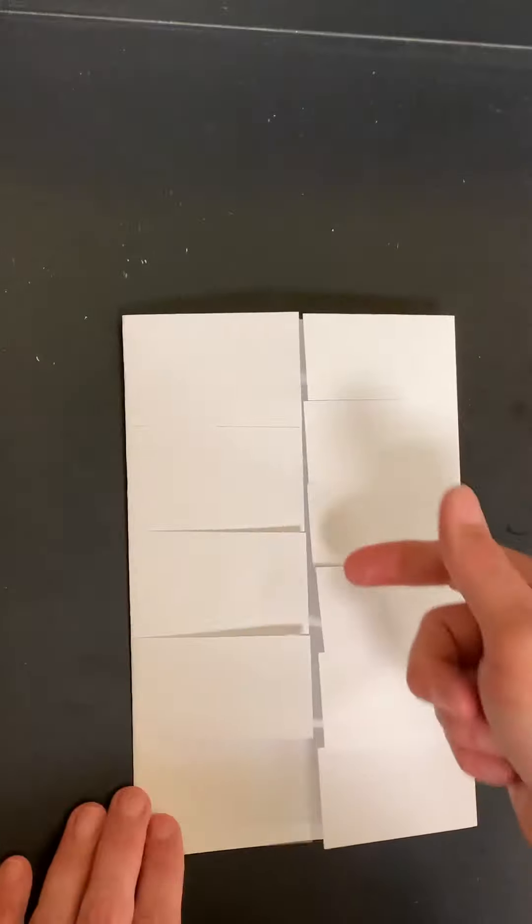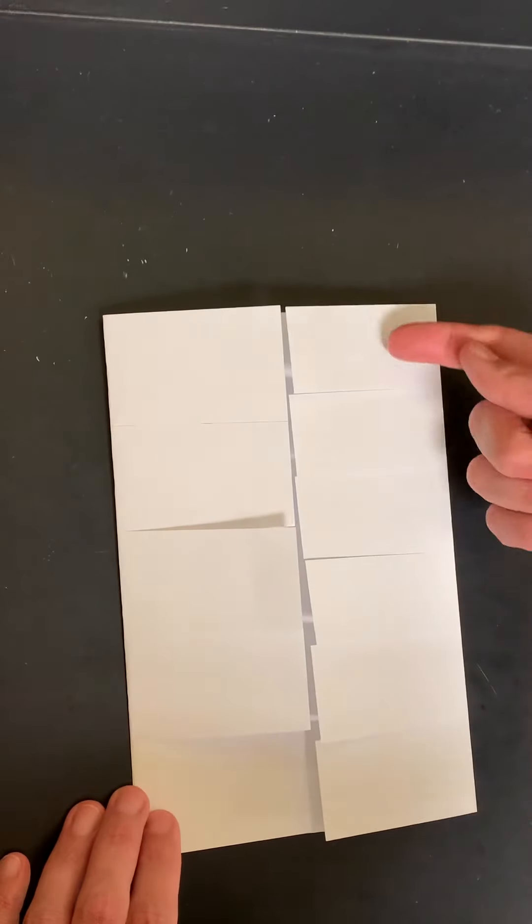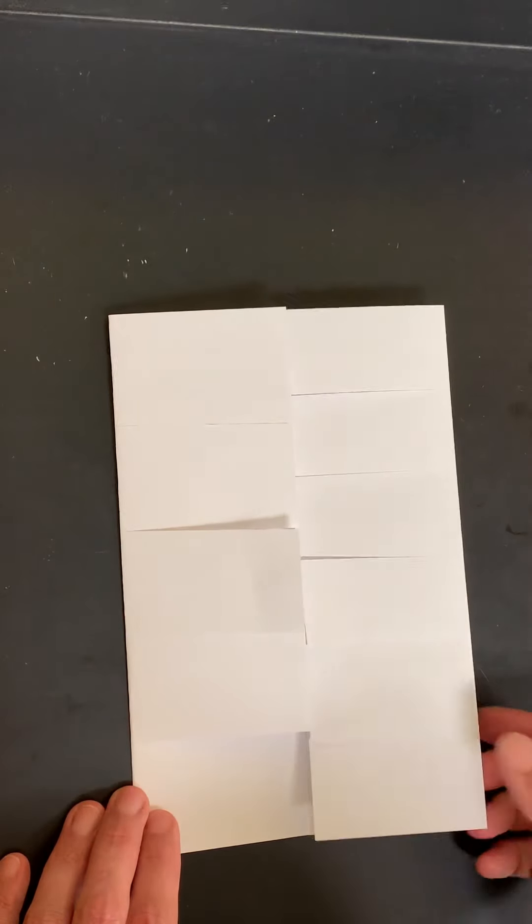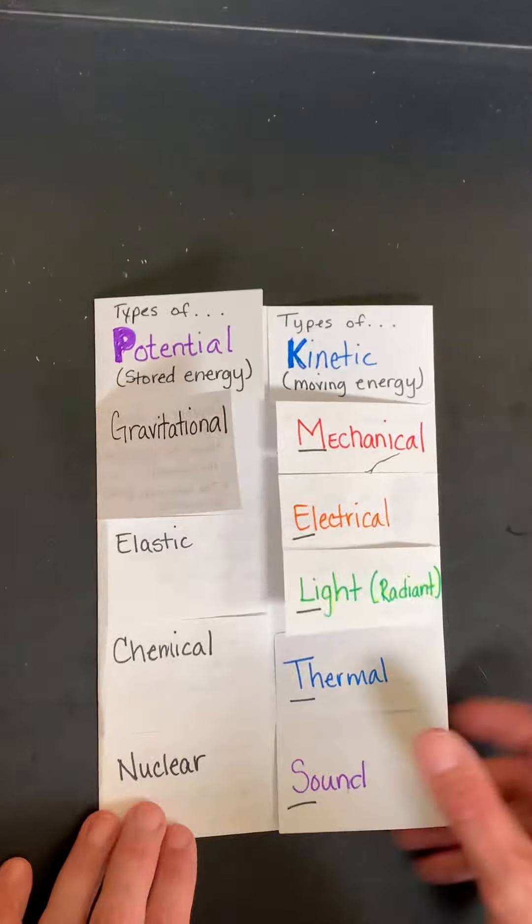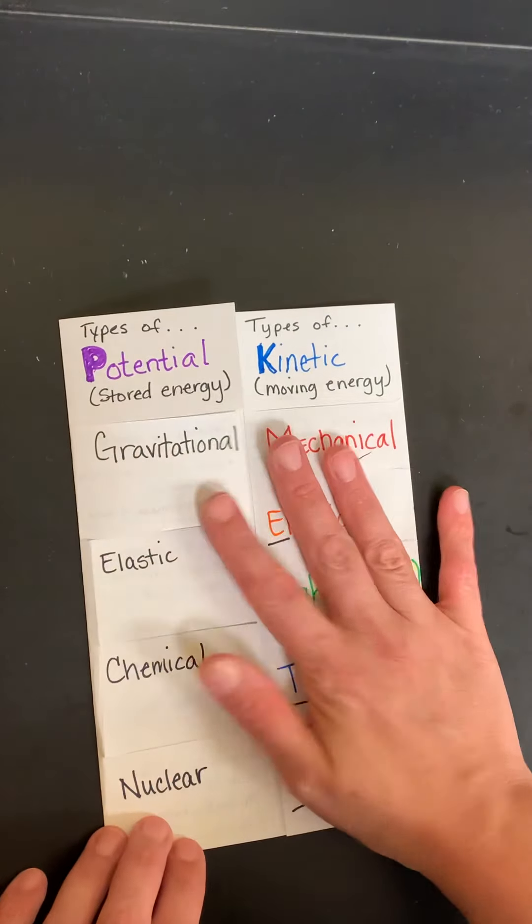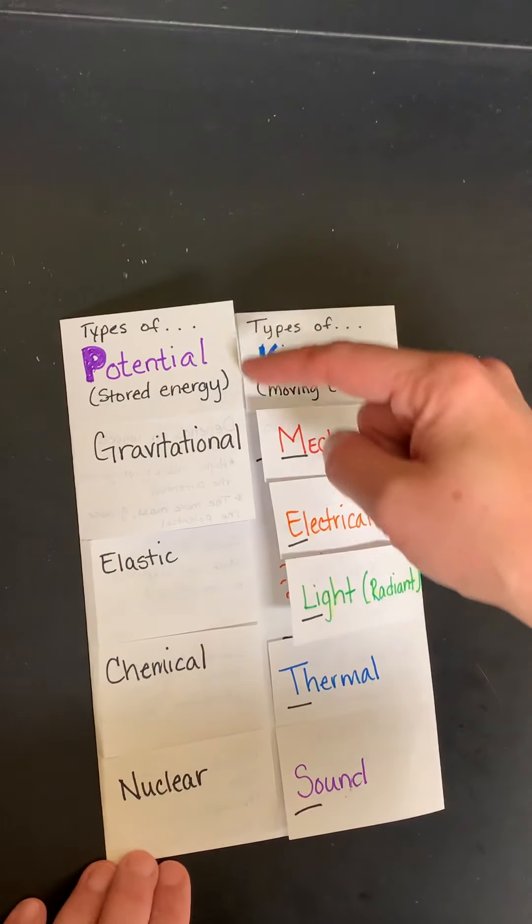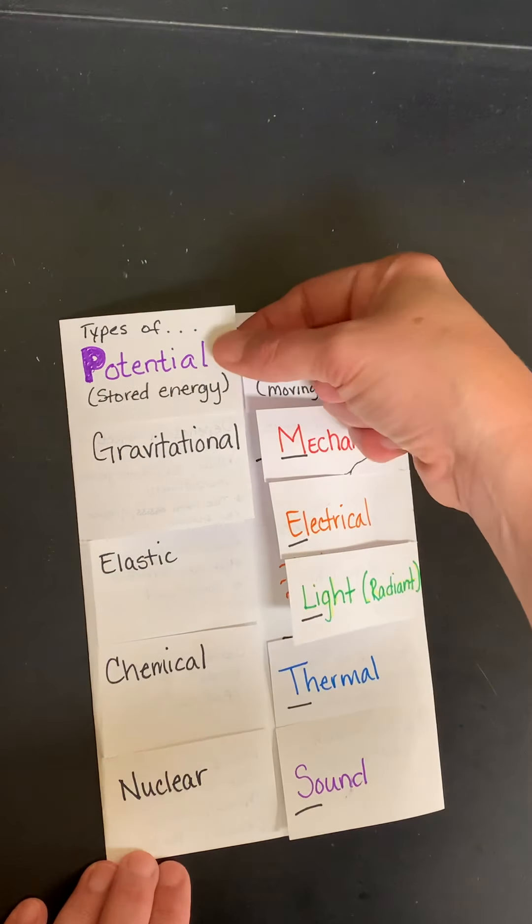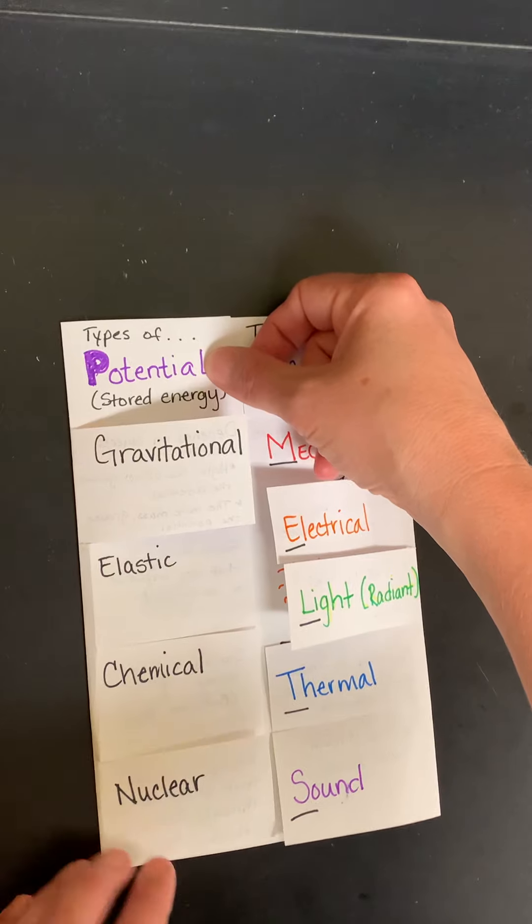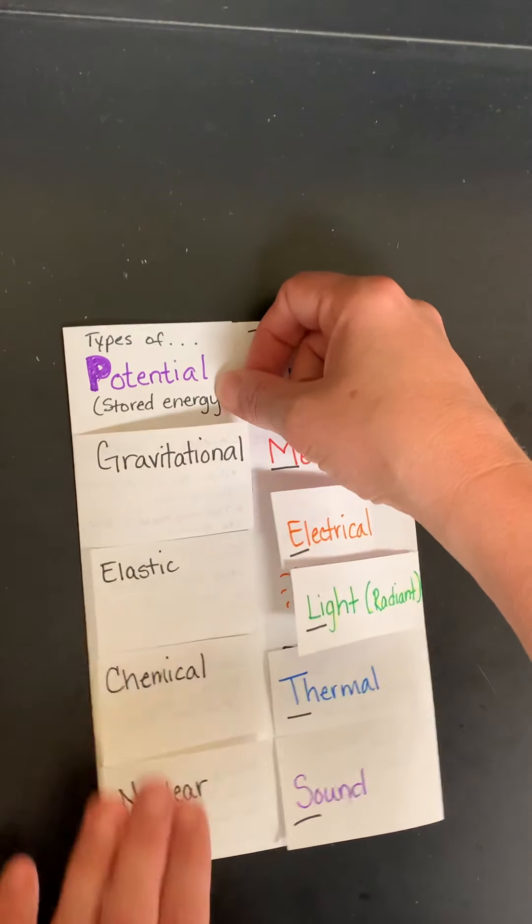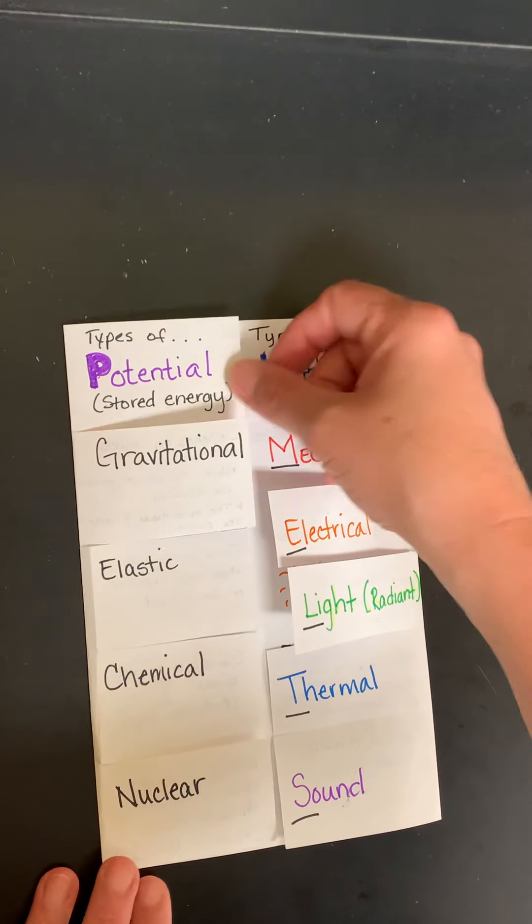So you should have five on the left and one, two, three, four, five, six on the right. Now I'm going to switch this out to my other set. We're going to go over this really quickly. On the left hand side is going to be the types of potential energy. Remember potential is stored energy, so I put that in parentheses up here. You have four types: gravitational, elastic, chemical, and nuclear.